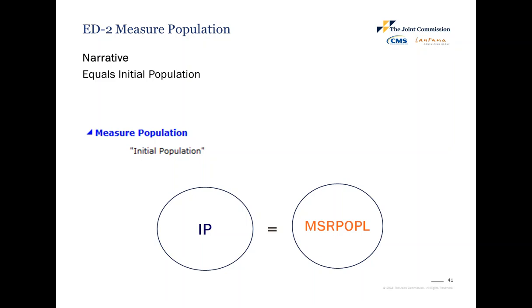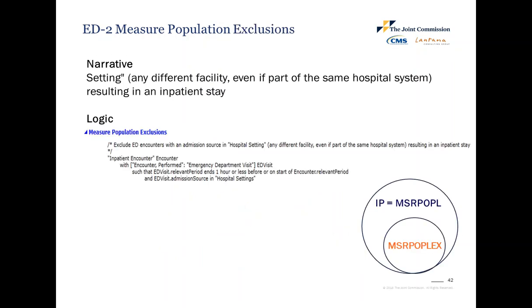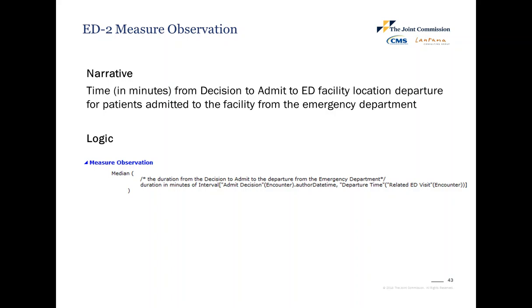The measure population for ED2 is the same as the initial population. ED2 has the same exclusions as ED1 — excluding admissions that came from another facility, constrained by the value set hospital setting to capture if the patient is transferred from an outside hospital where they were considered an inpatient or outpatient. If so, this patient would be excluded.